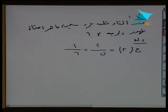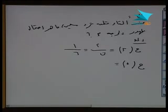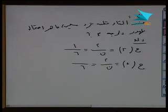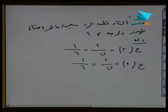وبالتالي لو قلت المسألة دي مرة تانية وقلت: إيه احتمال ظهور الوجه خمسة؟ ده عبارة عن ميم على نون. إيه النون دي؟ دي عدد الحالات الكلية للتجربة. التجربة رمي قطعة النرد لها ستة حالات. الرقم خمسة موجود مرة واحدة في قطعة النرد. يبقى ميم = واحد. يبقى الاحتمال واحد على ستة. وبالتالي احتمال ظهور الوجه اتنين وكذلك الوجه ستة = واحد على ستة.